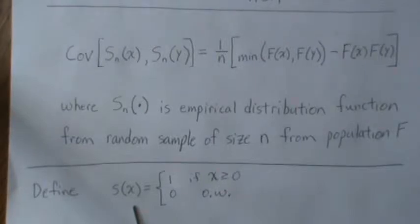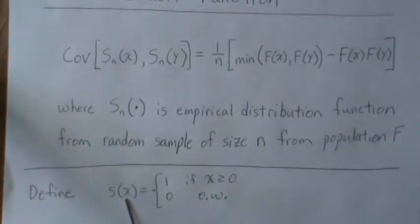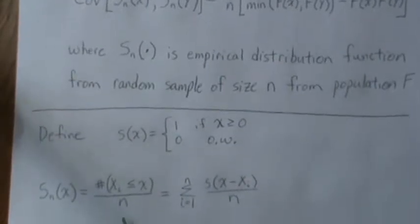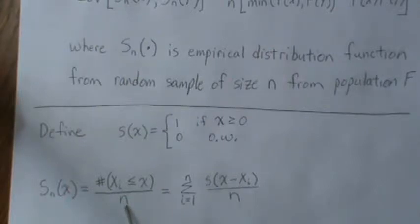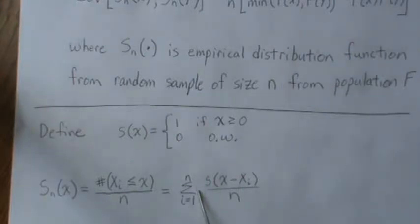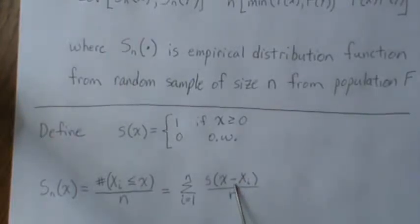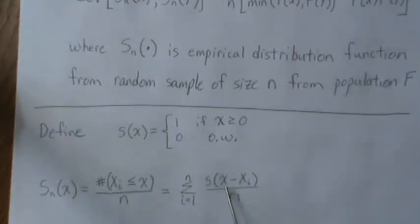Let's define an indicator function — call it the sign function — where if the input is greater than or equal to 0 it's 1, otherwise it's 0. The empirical CDF is the number of x's in the sample less than or equal to that value divided by n. It can be rewritten using this indicator function as the sum from 1 to n of the sign of (x minus each data point) divided by n. This is 1 only when xi is less than x, so it counts the number in the sample less than x, which is the empirical CDF.